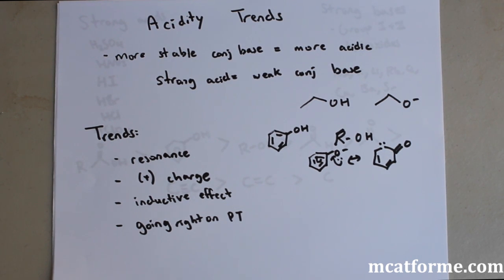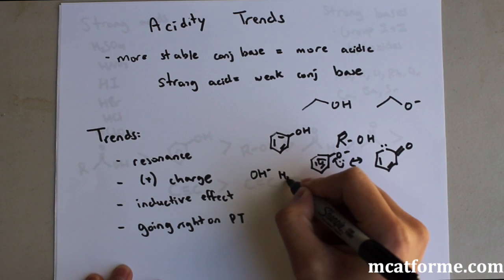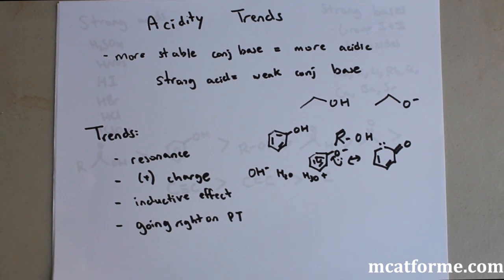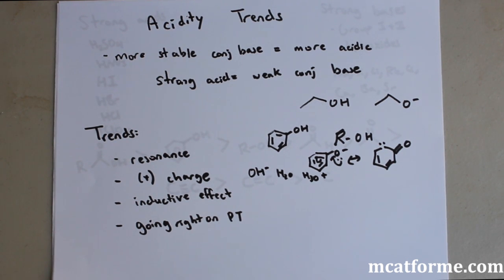Having a positive charge will generally make a molecule more acidic. The classic examples are OH⁻, H₂O, and H₃O⁺. OH⁻ is obviously a very strong base, H₂O is neutral, and H₃O⁺ is a strong acid. So the general trend is: more positive charge means more acidic. This is a bit less reliable than the other trends and there are exceptions, but it is a useful general rule you can count on.